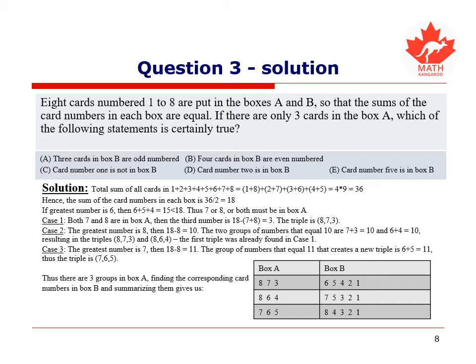6, 5, 4, 2, 1, 7, 5, 3, 2, 1, and 8, 4, 3, 2, 1. When checking which statement is always true, we see that statement D is always true, as number 2 is always in box B. Therefore, our answer when comparing each statement is D.